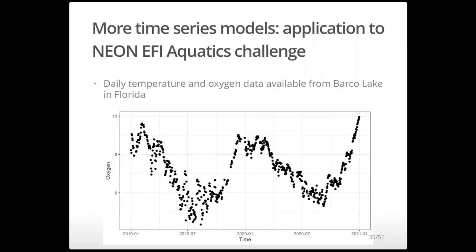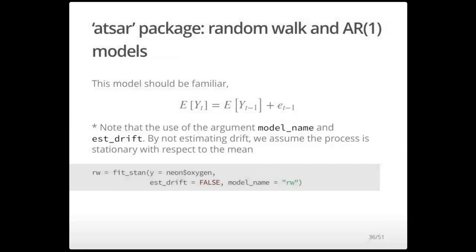Initially what we're going to do is just take the oxygen data — we have temperature data too, which we'll talk more about on Thursday for the multivariate problem. Starting with this data, I wanted to fit some of these univariate time series models and talk about the output. These are daily measurements. We'll focus on the autoregressive and the random walk models. Starting with the random walk: the expected oxygen at time T is just the expected oxygen at time T-1 plus some error. In the atsar package, the only function you can really call is the fit_stan function. You pass in the name of your data — in this case, a dataframe of the NEON data — along with the model name and other arguments.